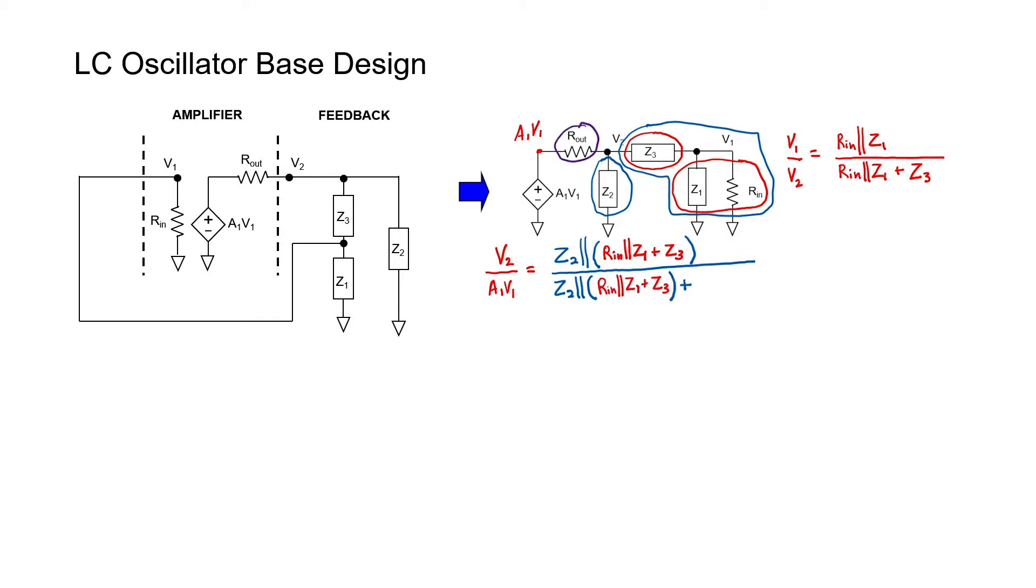And Rout is our series circuit element. To simplify the numerator, we note that Z2 is in parallel with an expression. Z2 is thus multiplied in the numerator and added in the denominator with that expression.